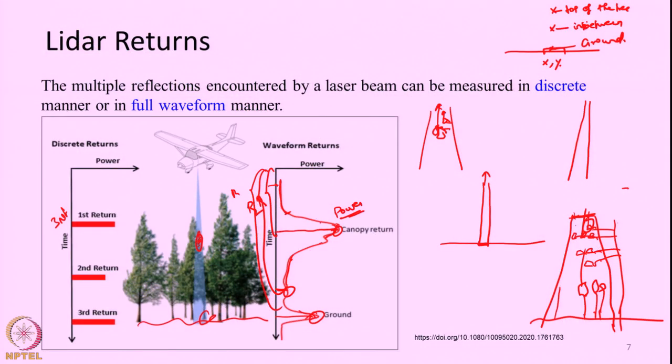Some LiDAR systems now store the entire signal coming back — either in analog form or in digital form with a very high sampling frequency — trying to store as many observations as possible within the beam. Some systems may store 50 or 60 returns per pulse, which is enough to cover almost all normal layers. A full waveform LiDAR produces a more or less continuous representation of the signals reflected, storing the entire waveform. A LiDAR system can therefore be either discrete or full waveform.